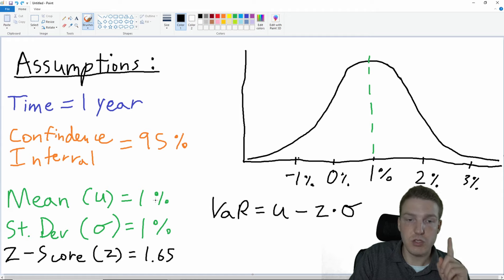We're assuming a mean expected return of 1%, so over this one-year period we're expecting a 1% return, with a standard deviation of 1%. You can see the dotted green line at 1%—that's our mean, our expected return. But we're trying to find the tail risk: at a 95% confidence interval, what might we lose?